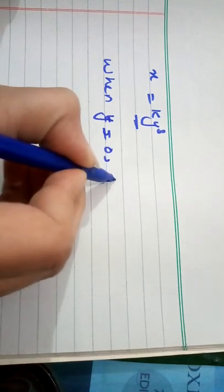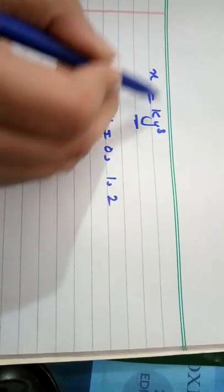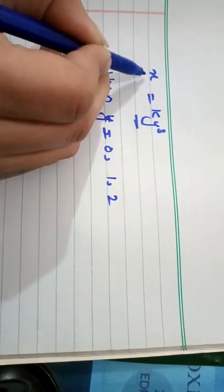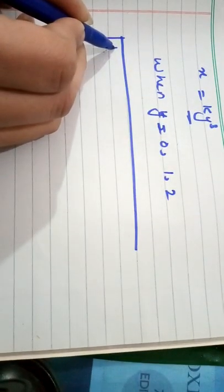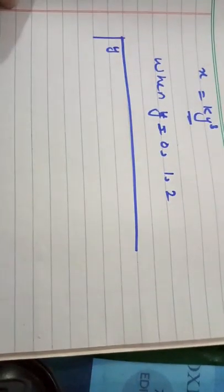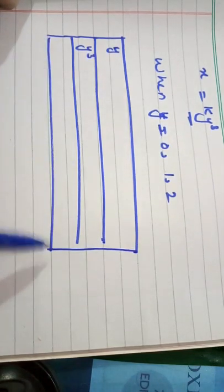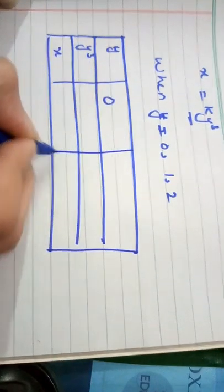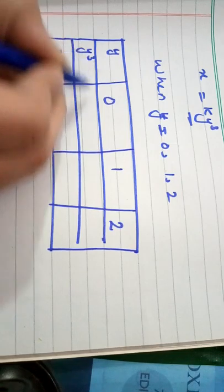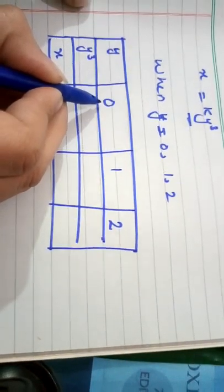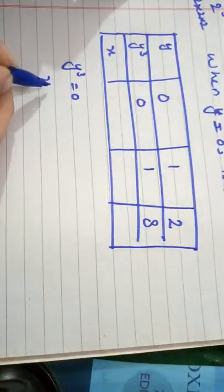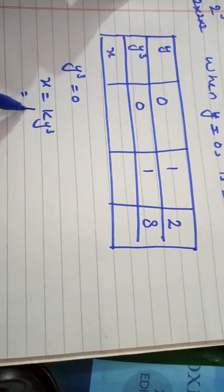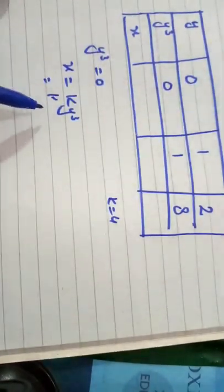Now the second part: find the value of x when y is equal to 6. We have a new value of y that is 6, and x is unknown. We put this value of y into the connecting equation to find the value of x. We want to find x; y is 6 and k is 4. So putting these values into x equals k times y cubed gives x equals 4 times 6 cubed.